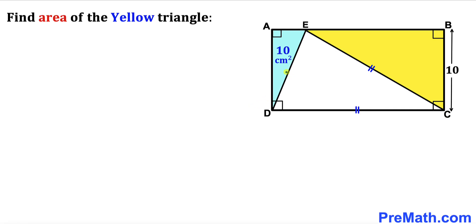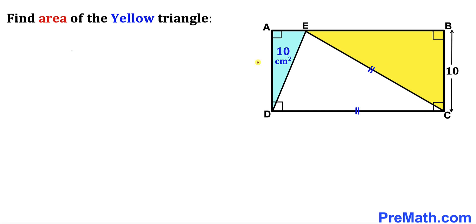Welcome to pre-math. In this video, a blue and yellow right triangle are fully confined in a rectangle ABCD, such that the area of the blue right triangle is 10 cm², this side length of the rectangle is 10 cm, and line segment CD is equal to line segment CE. Our task is to calculate the area of the yellow shaded triangle.